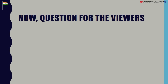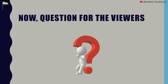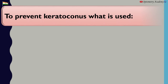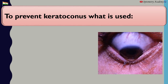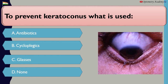Now, a question for the viewer: To prevent keratoconus, what is used? A. Antibiotics, B. Cycloplegics, C. Glasses, D. None. Kindly comment your answer in the comment box.